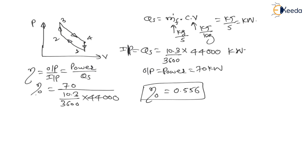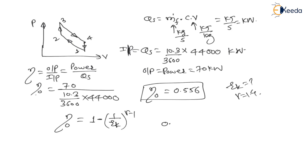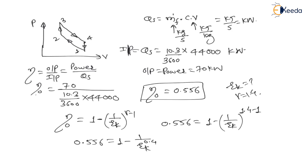In the theory lectures we derived the formula for efficiency of the Otto cycle in terms of compression ratio: efficiency equals 1 minus 1 divided by RK raised to the power (gamma minus 1). The question asks for RK, and gamma is given as 1.4. So, 0.556 equals 1 minus 1 upon RK raised to 0.4. Simplifying, 1 upon RK raised to 0.4 equals 1 minus 0.556. Solving this gives compression ratio RK equal to 7.61.